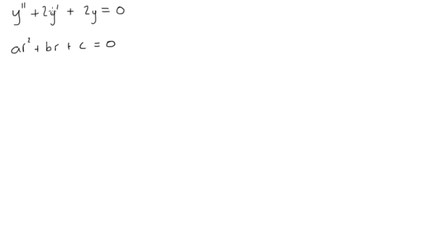Now a, b, and c are our constant coefficients that we have here, so we can fill those in. And a will be 1, so we'll get r squared plus 2r plus 2 is equal to 0.